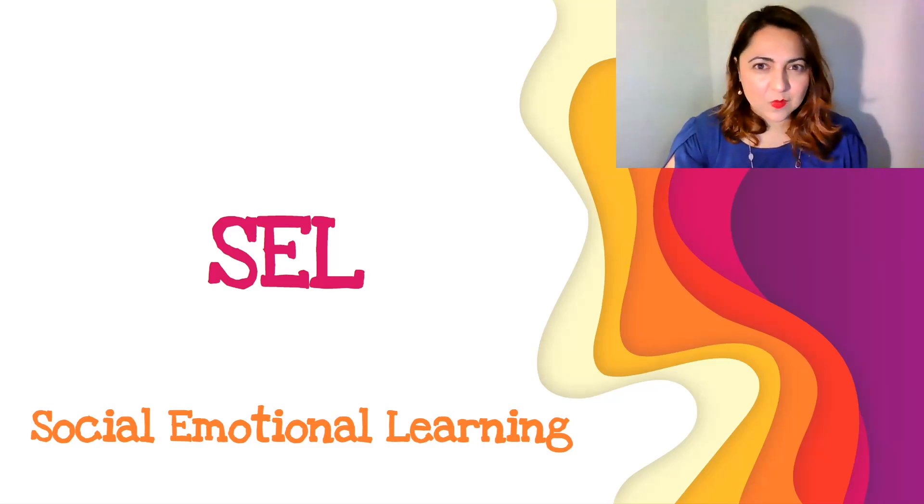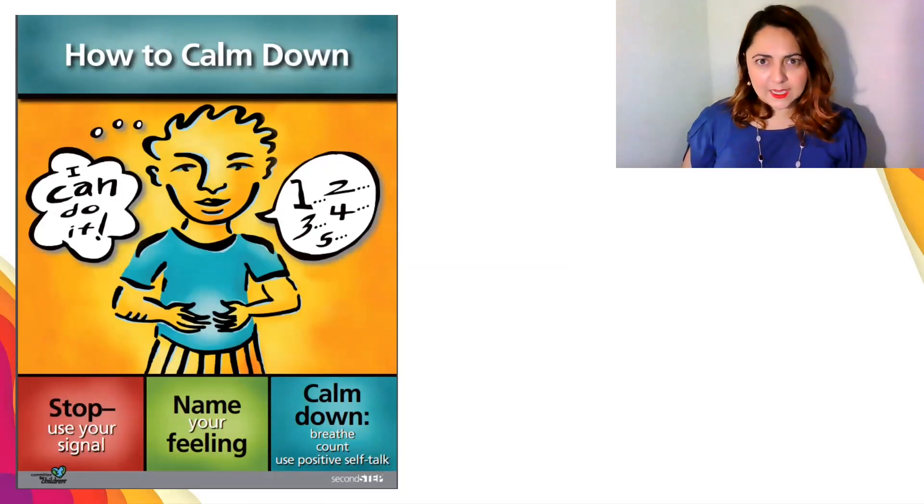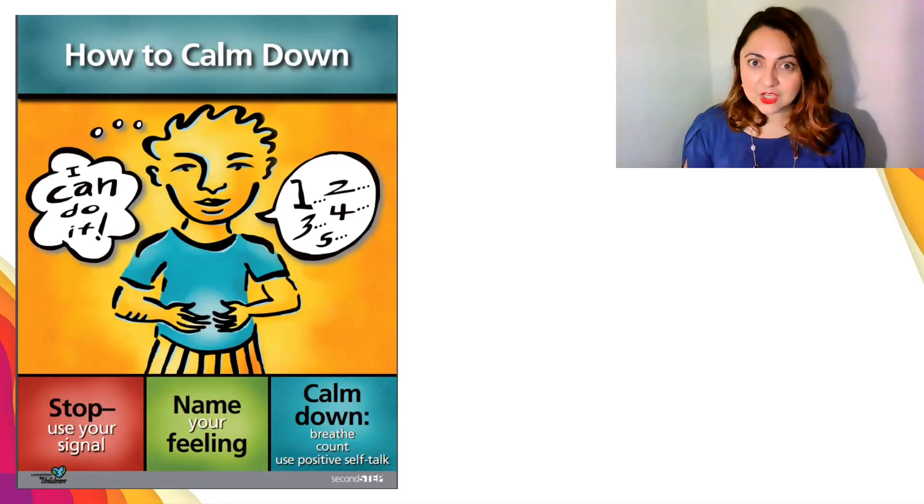For the past several weeks, we've been learning a lot about emotions and how to calm down. We know that the first thing to calm down is to stop and take a moment to become aware and name your feeling. Try to figure out what you're feeling in that moment, and then use some of the calming down strategies, whether it's breathing, counting, or using positive self-talk.